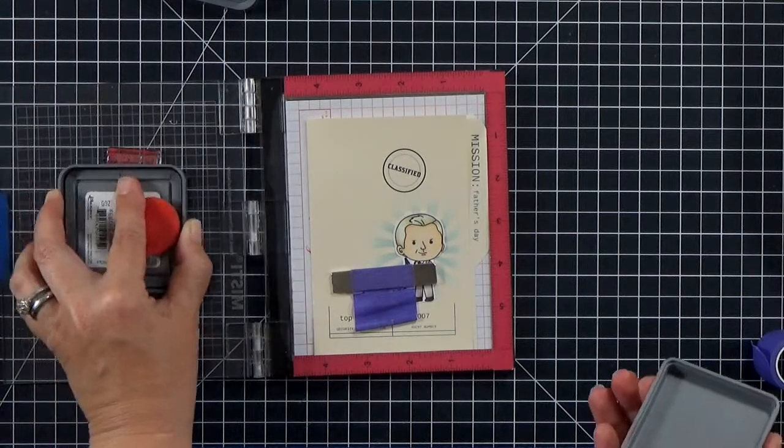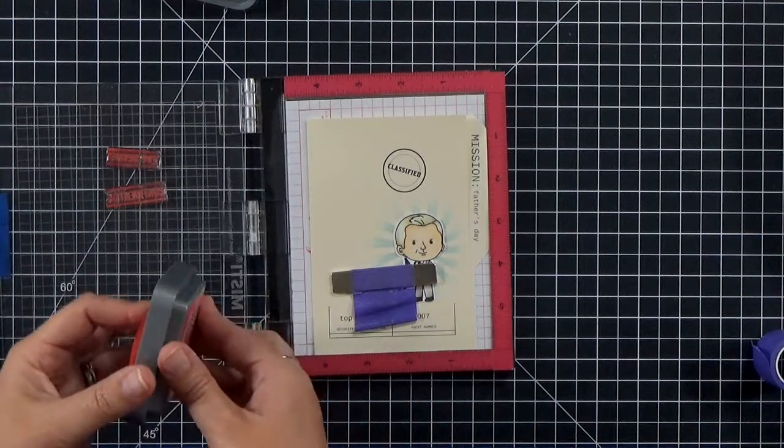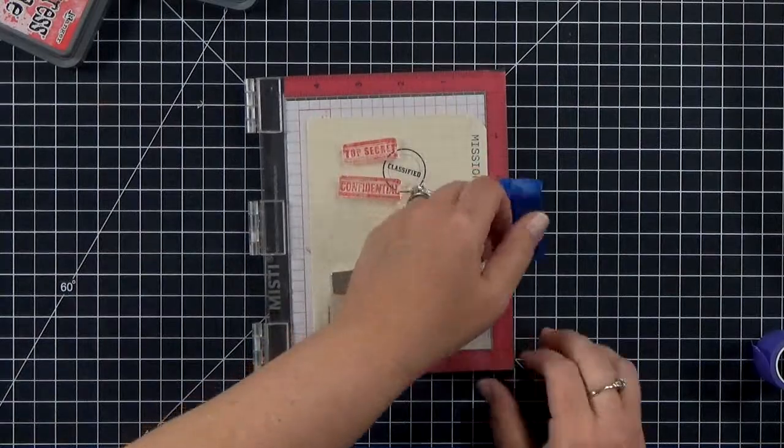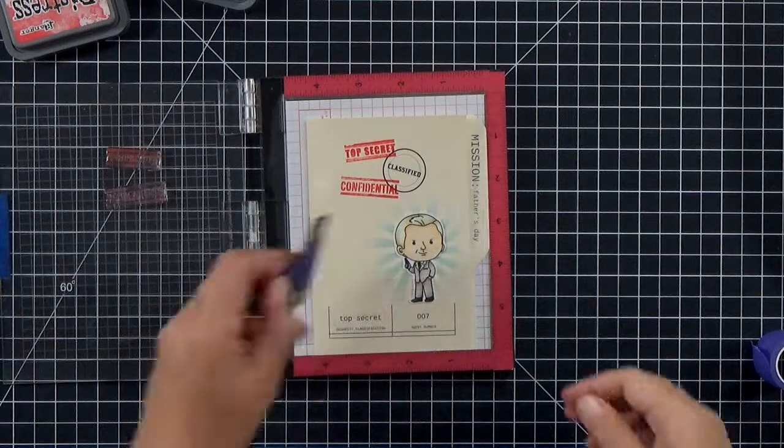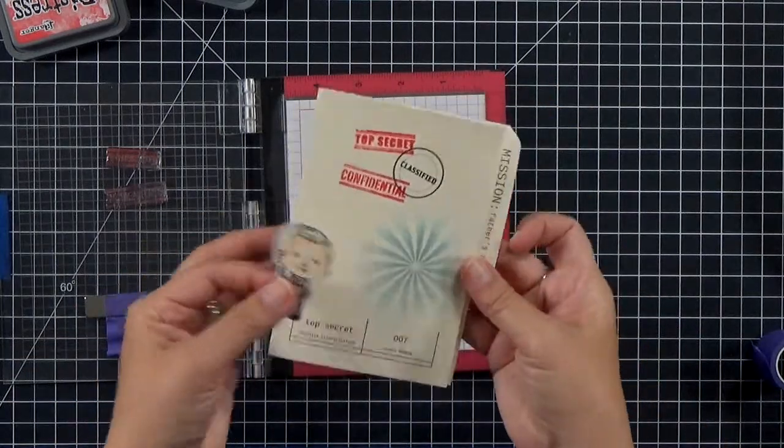So I'll stamp it. And I actually stamped it twice. This is the first time I've used these stamps. So I didn't condition them first, so I ended up stamping them twice. But that gives us a nice pop of color on the front there. And then we can work on the inside.